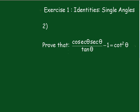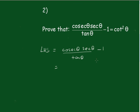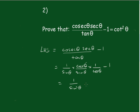Now the left hand side is equal to cos theta over tan theta minus 1. And of course cot theta is 1 over tan theta, which we write as cos theta over sin theta. And sec theta is 1 over cos theta.